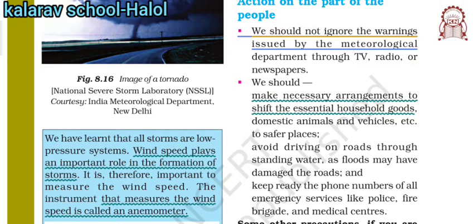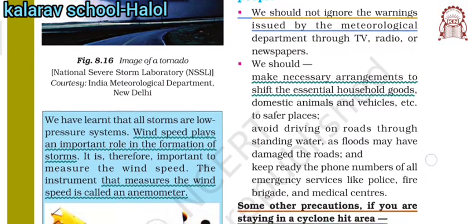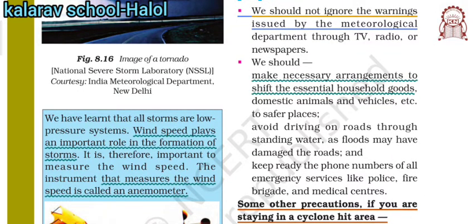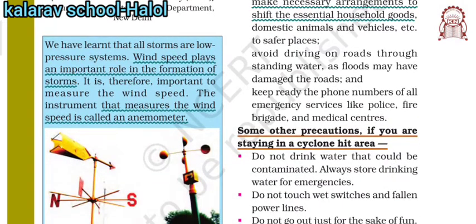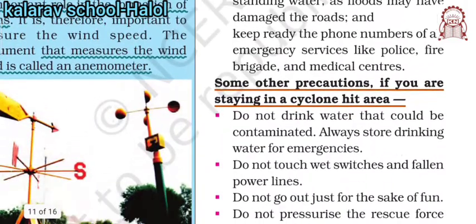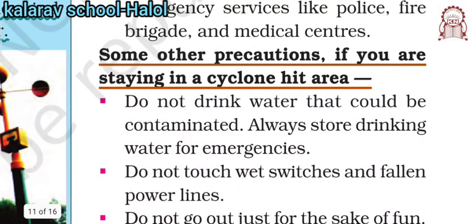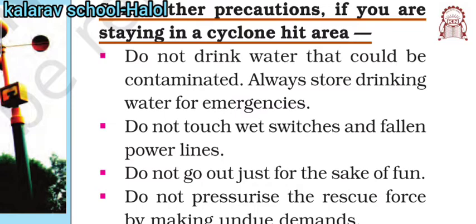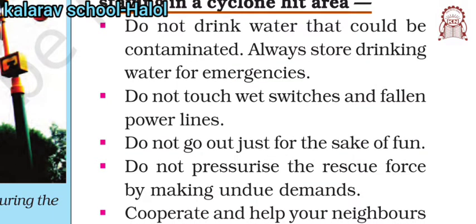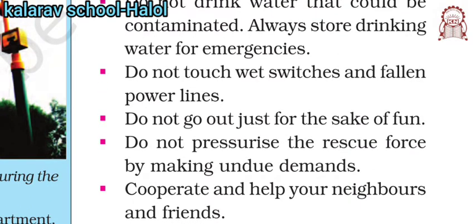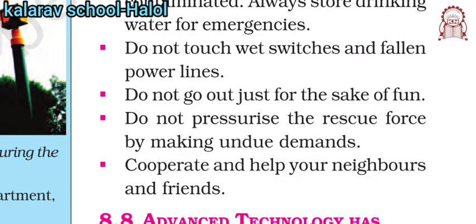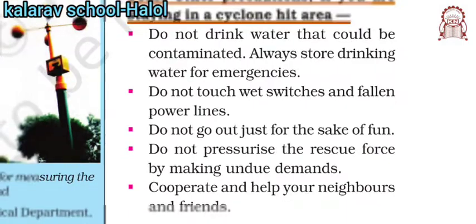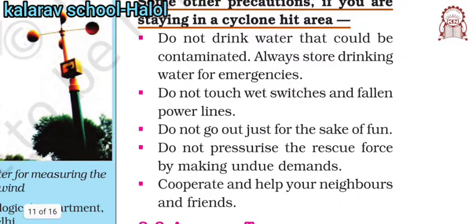To summarize: number 1, do not ignore the warning; number 2, make necessary arrangements; number 3, avoid driving; number 4, keep phone numbers of all emergency services ready. If you are staying in a cyclone-hit area: do not drink contaminated water, always store drinking water, do not touch wet switches or fallen power lines, do not go out just for fun, do not pressurize rescue forces with undue demands, and cooperate and help your neighbors and friends.